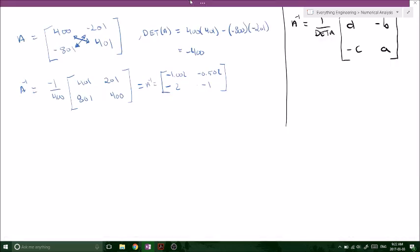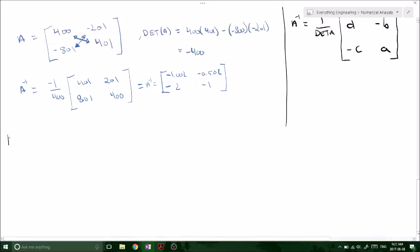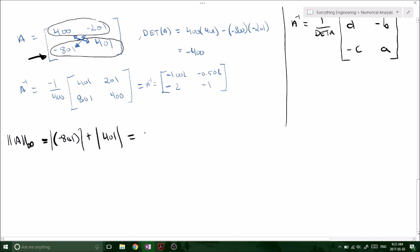Okay, so now we need to find the norms, the norms of these matrices, right? So norm of A, our original matrix, we've got a 400 and a 200 in the first row, and we've got an 800 and a 401 in the second row. And we know that we're taking the absolute value, remember? So if we've got a negative, just take the absolute value. So we can see that the second row is going to give us a larger value. So 800 plus absolute of 401 gives us 1201. Good.